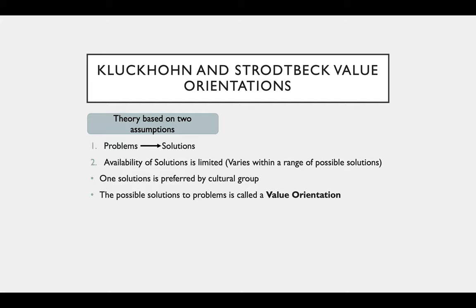Kluckhohn and Strodtbeck had two assumptions: humans tend to face universal problems that need a solution, and there is a range of possible solutions available, but a cultural group would prefer one solution for their group. The solution a cultural group chooses to solve a problem is called a value orientation. So your cultural group will most likely choose a specific solution to a problem, and that solution is applied to the entire cultural group.